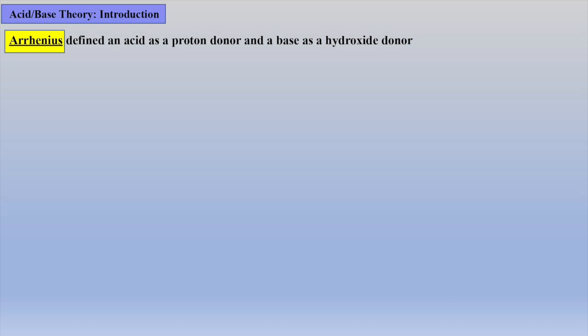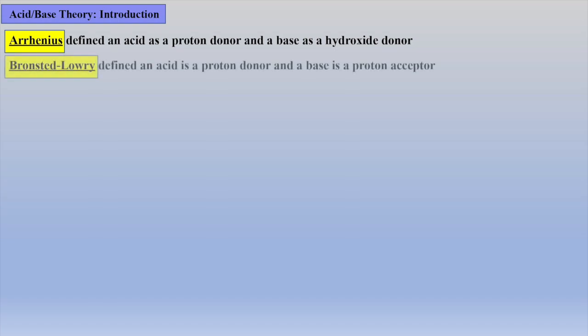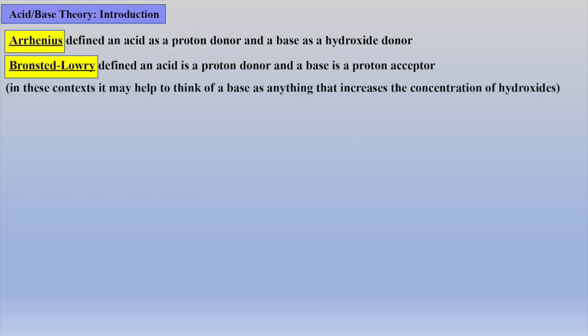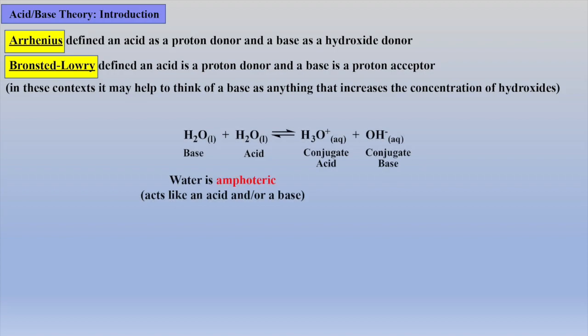So how do the concentrations of proton and hydroxide change? Arrhenius defined an acid as a proton donor and a base as a hydroxide donor, but a more widely used definition has been put forth by Bronsted and Lowry, which says an acid is a proton donor and a base is a proton acceptor. In this context, it may help to think of a base as anything that increases the concentration of hydroxides. Within the autoionization of water, water can act like an acid, a proton donor, and a base, a proton acceptor, and this is termed amphoteric, acting like both an acid and base.